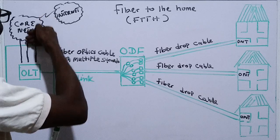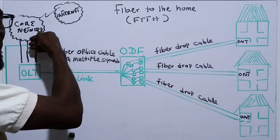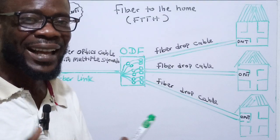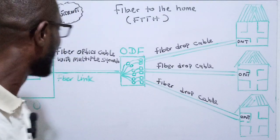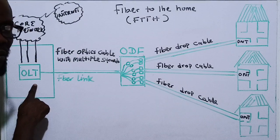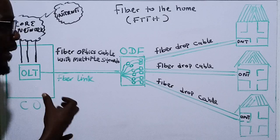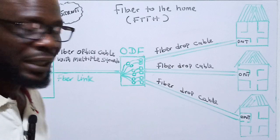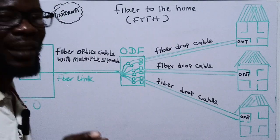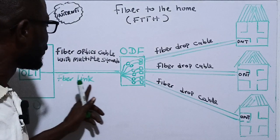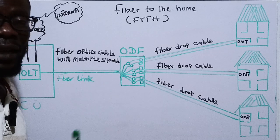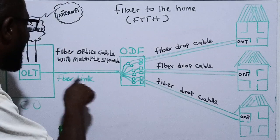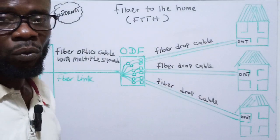When data from the core network enters the OLT, it is converted into laser light. The light source generates laser, converting data — video, audio — from the core network into laser light. This light travels through the fiber cable and can go more than 100 kilometers at the speed of light, reaching the customer within microseconds.